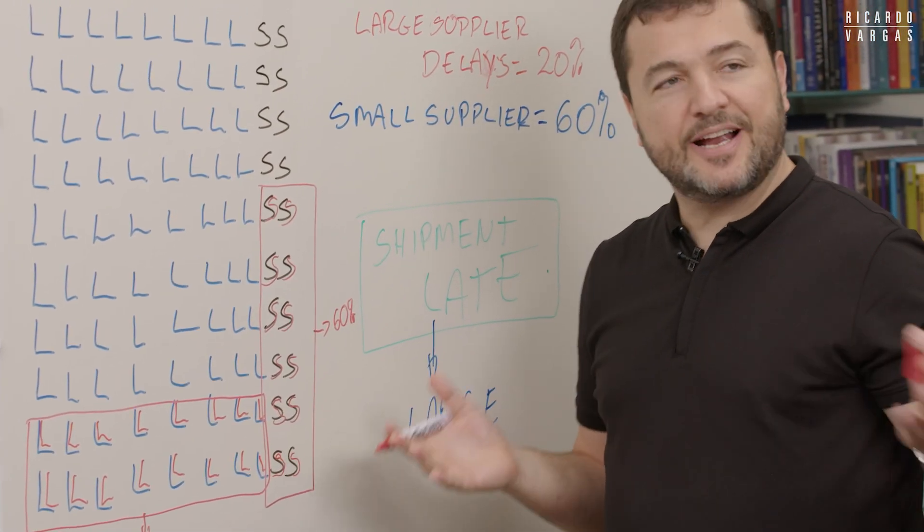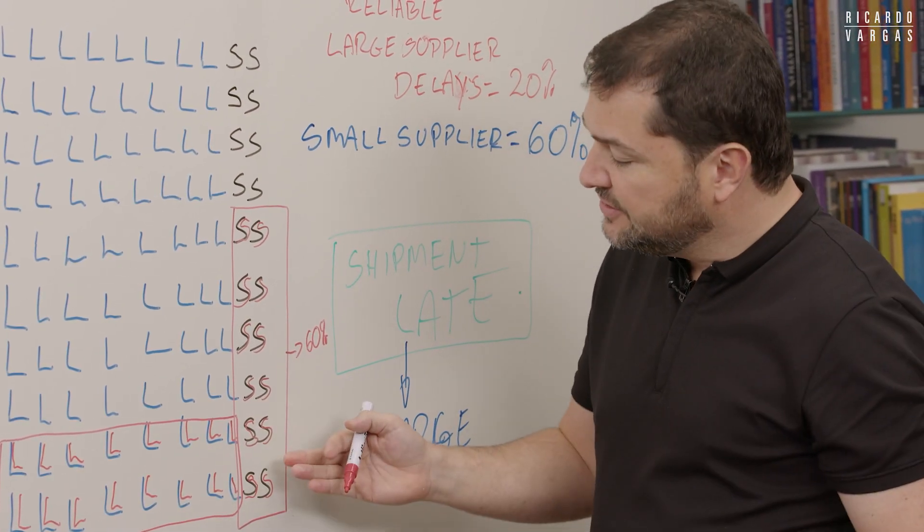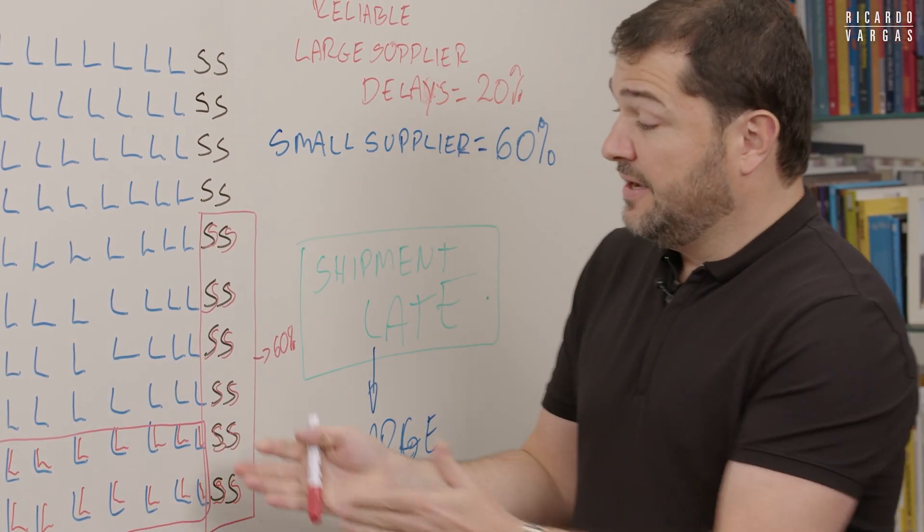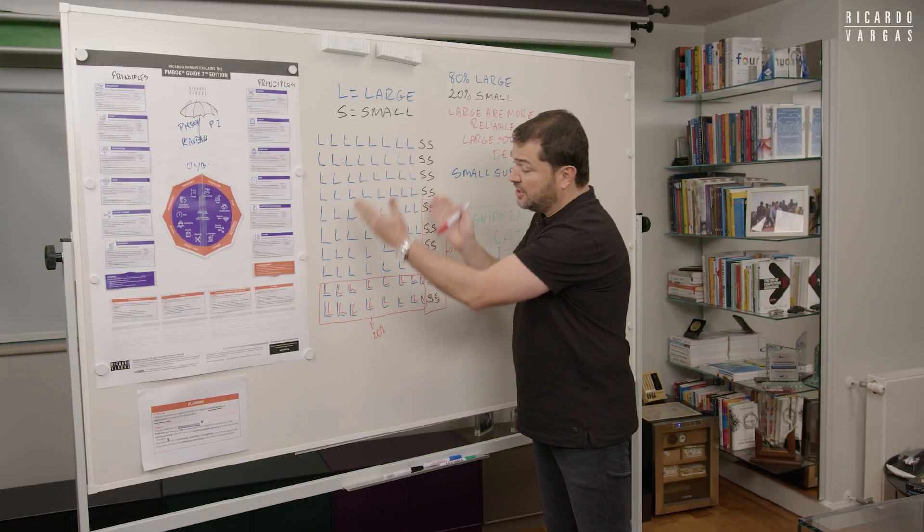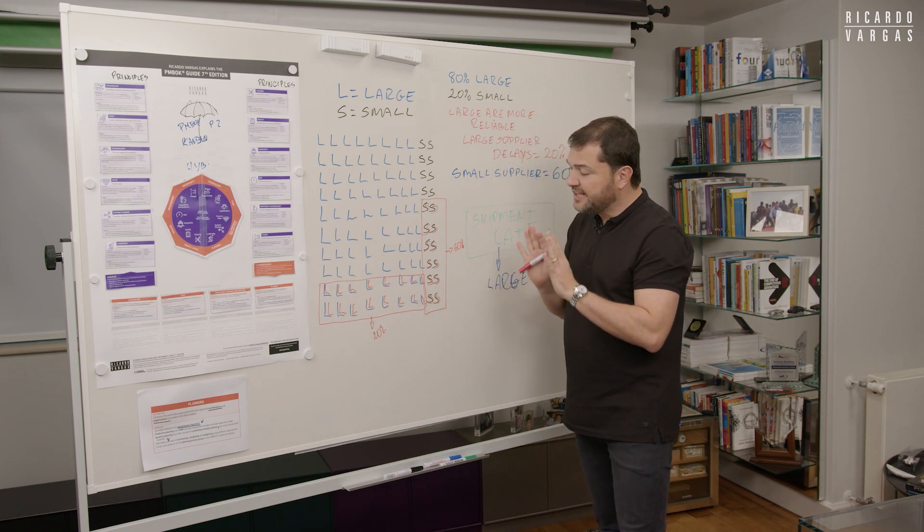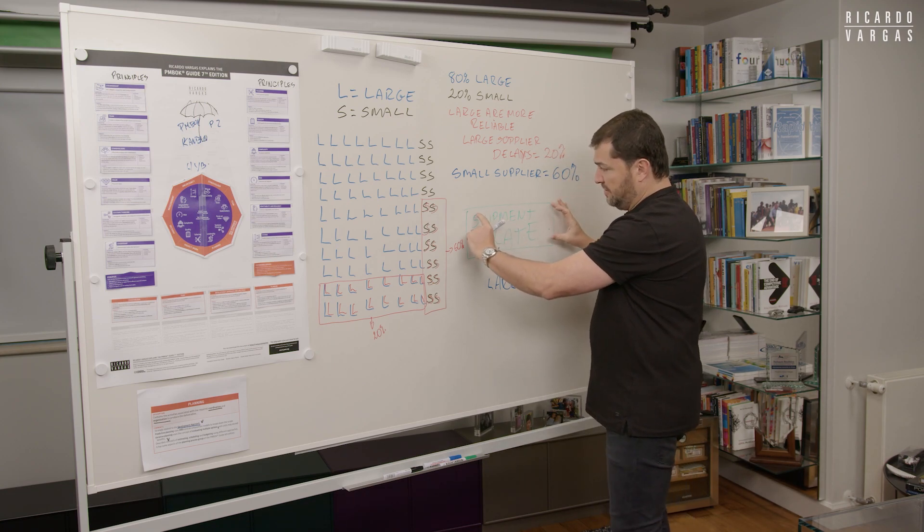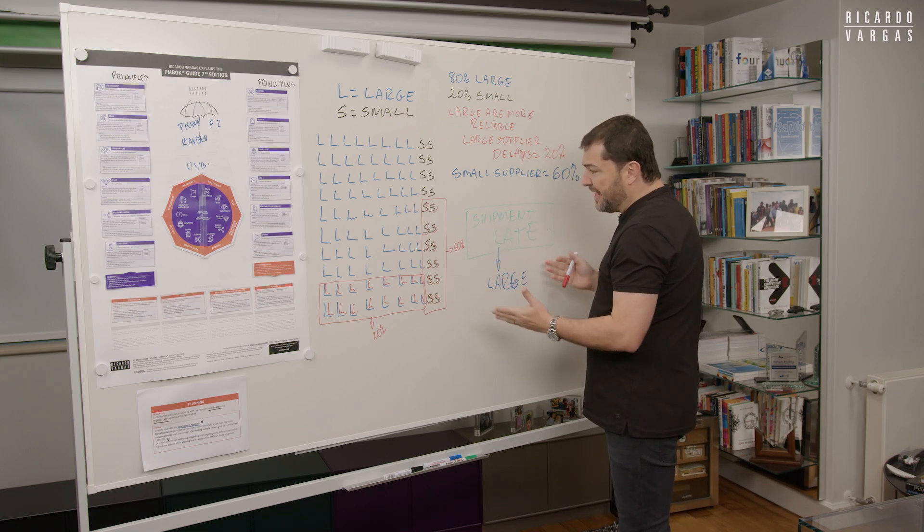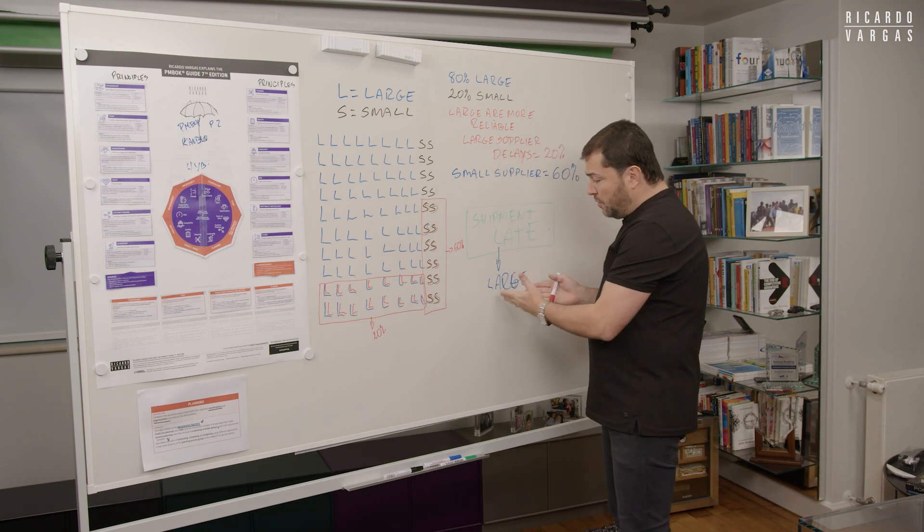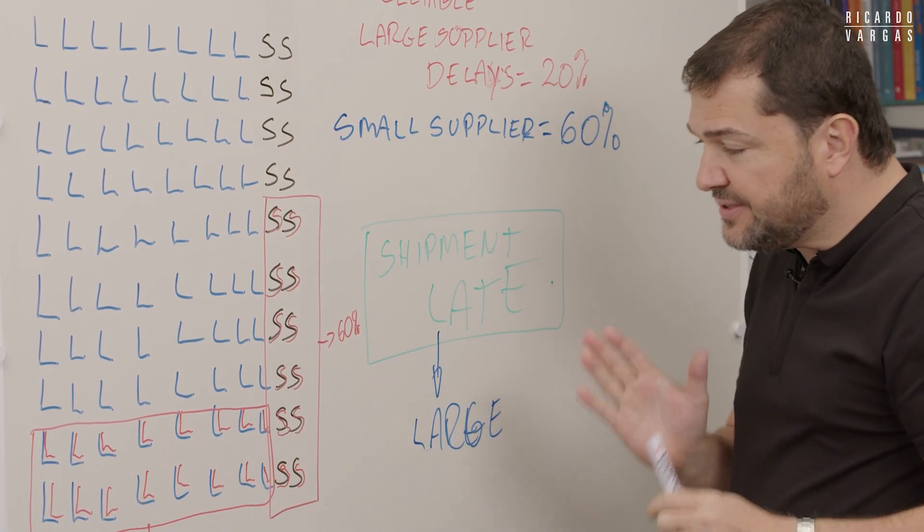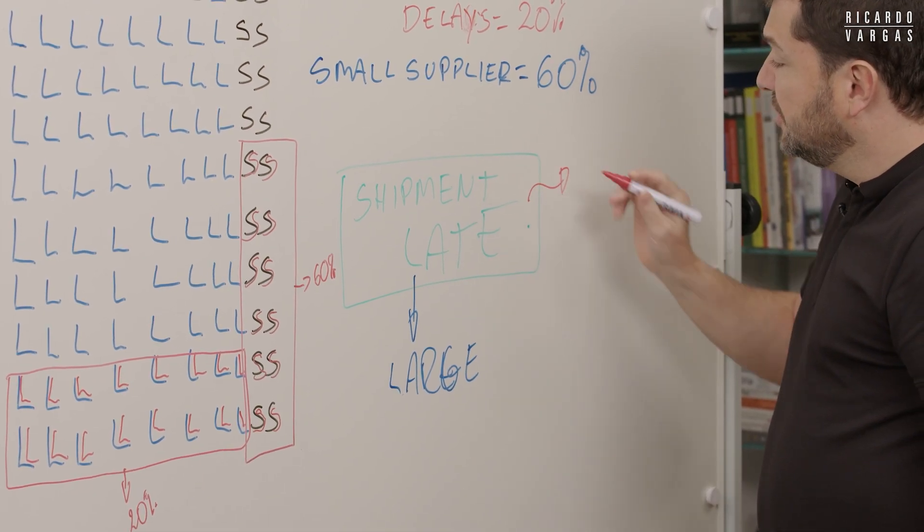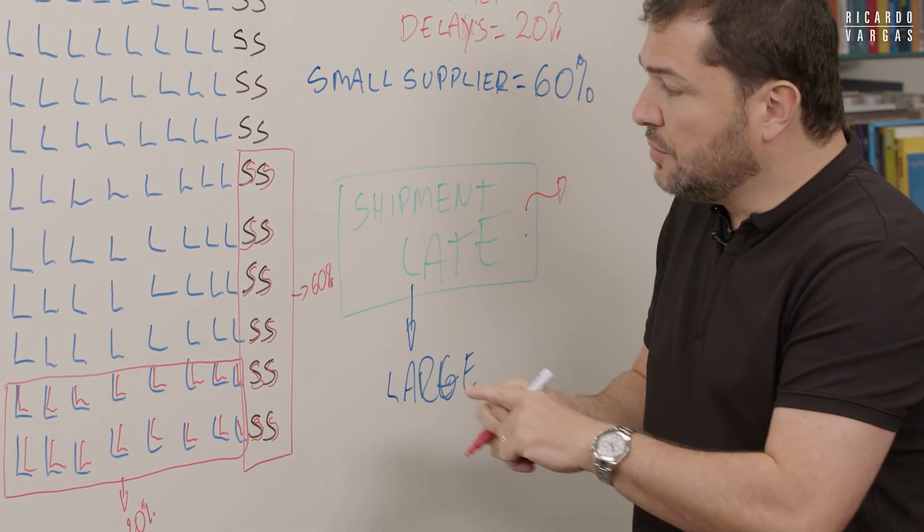If you want, you can calculate 60% of 20 is 12. 20% of 80 is 16. If you count here, you will have 16. I just did this to make it easier. So I want to know, I know that our supplier is on this red group here. And I want to know what's the probability of being large. So the first thing I need to know, shipment late is a universe of how many?